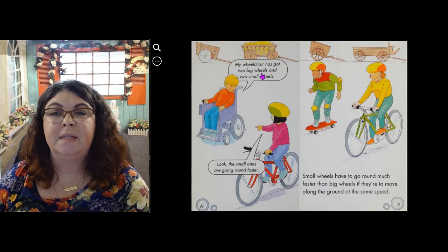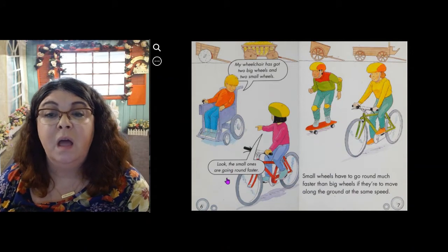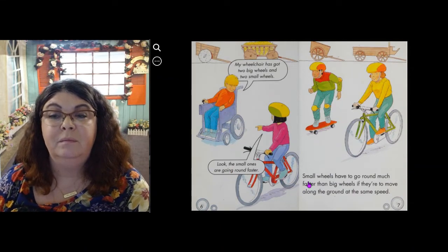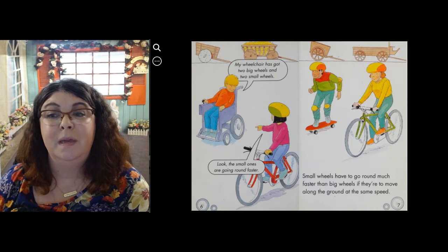My wheelchair has got two big wheels and two small wheels. Look, the small ones are going round faster. Small wheels have to go round much faster than big wheels if they're to move along the ground at the same speed.